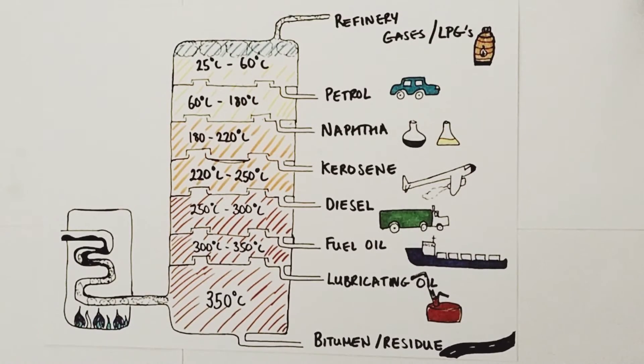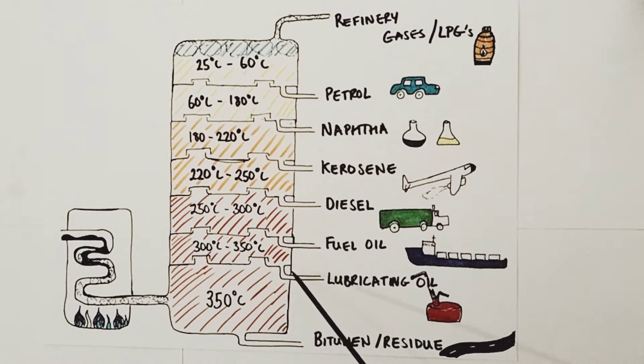The design of the fractionating column is clever in that it uses bubble caps at each division. Those bubble caps have two functions: one, they aid in the condensing of liquids at that particular temperature and allow them to flow out and be collected; secondly, they help prevent any flow back of liquids down into the previous fraction, helping to increase the efficiency of removal of fractions at the correct level.